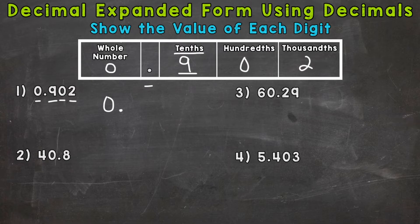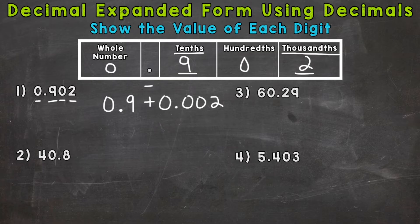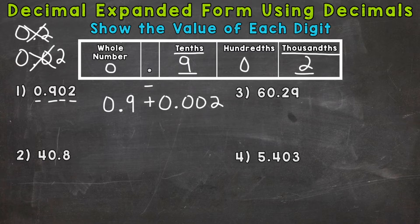That nine has a value of nine tenths, and we write that as a decimal. Plus, then we go to the two, which has a value of two thousandths. A common mistake would be writing two thousandths by just putting the two right after the decimal, or writing two hundredths — so those are incorrect. You need to be careful when it comes to decimals and placeholder zeros. We have two placeholder zeros that push that two to the correct place, the thousandths place. So there we have 902 thousandths in expanded form.